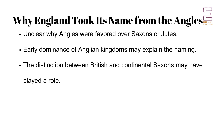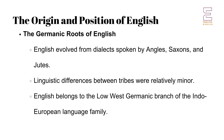It remains unclear why the land eventually took its name from the Angles rather than the Saxons or Jutes. One possible explanation is the early dominance of the Anglian kingdoms and the need to distinguish the British Saxons from the continental Saxons. Another possibility is that the Angles simply held a position of cultural and political prominence among the Germanic tribes that settled in Britain. Now let us study the origin and position of English.